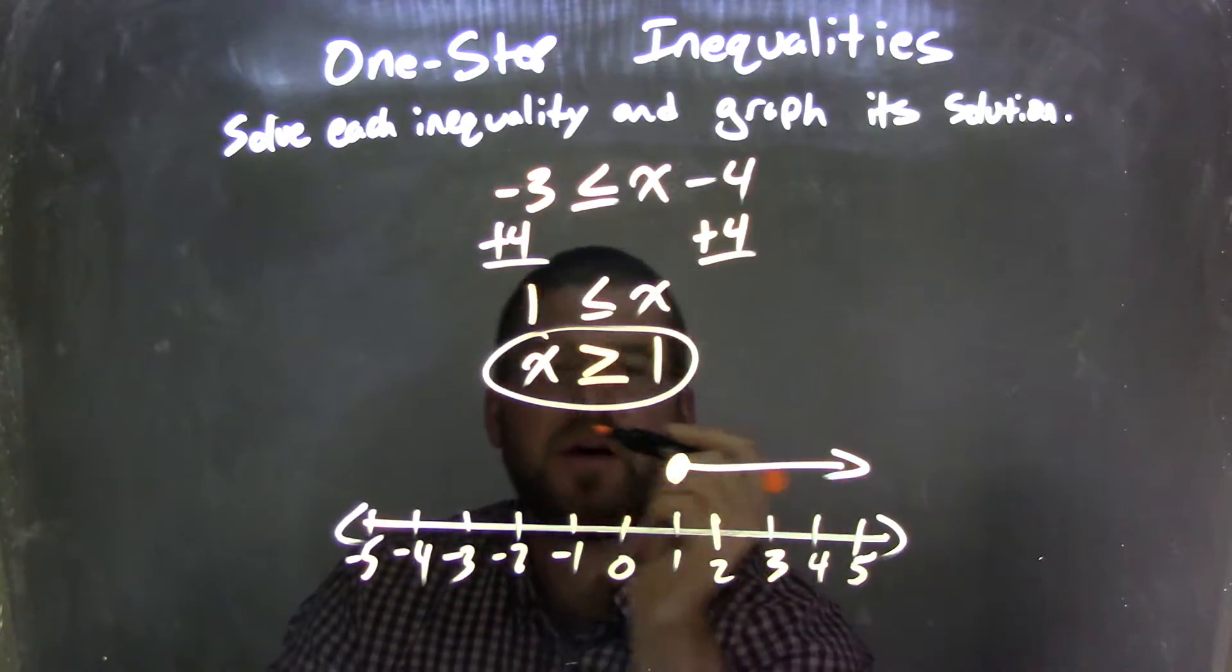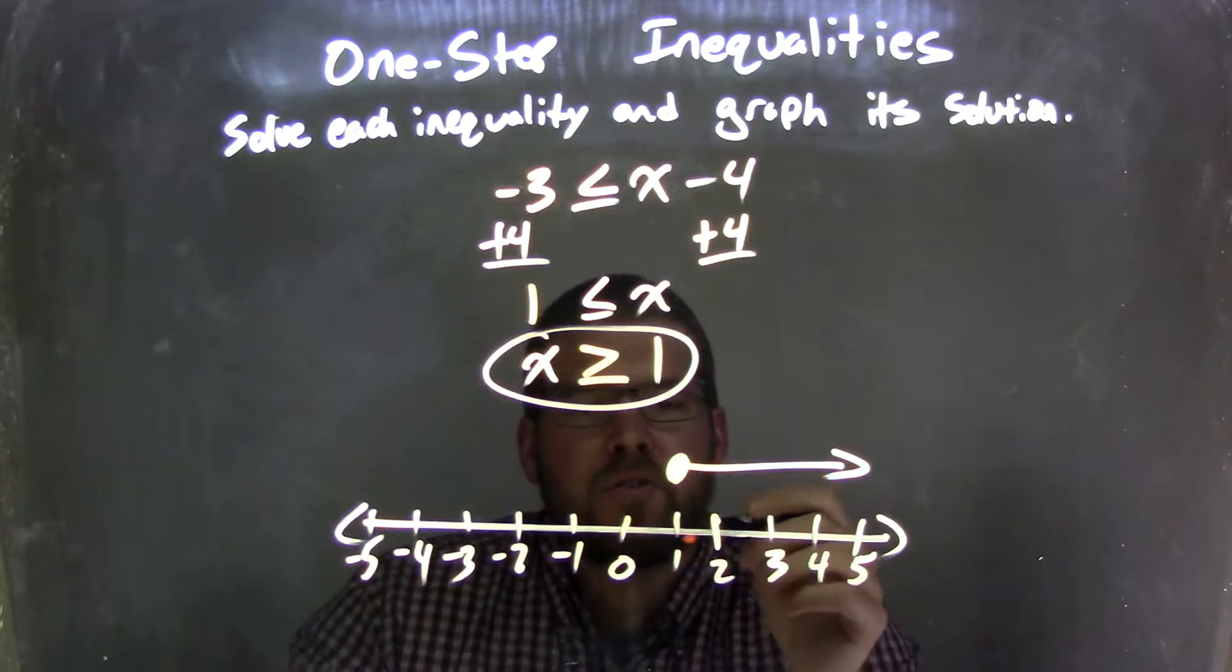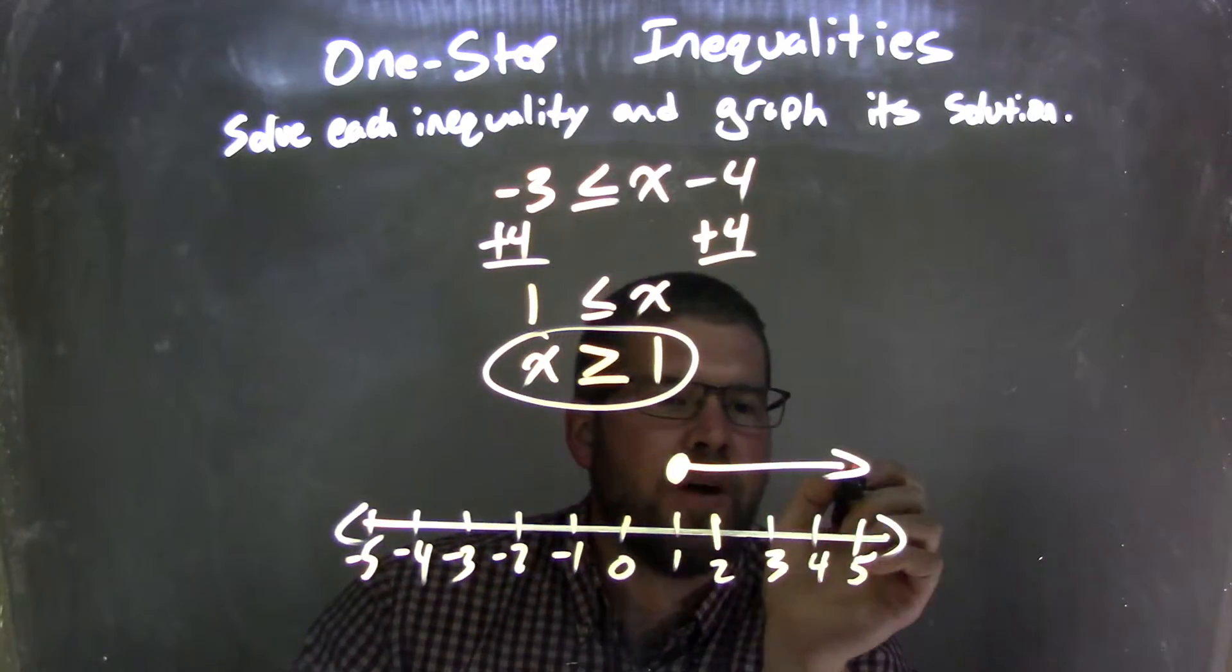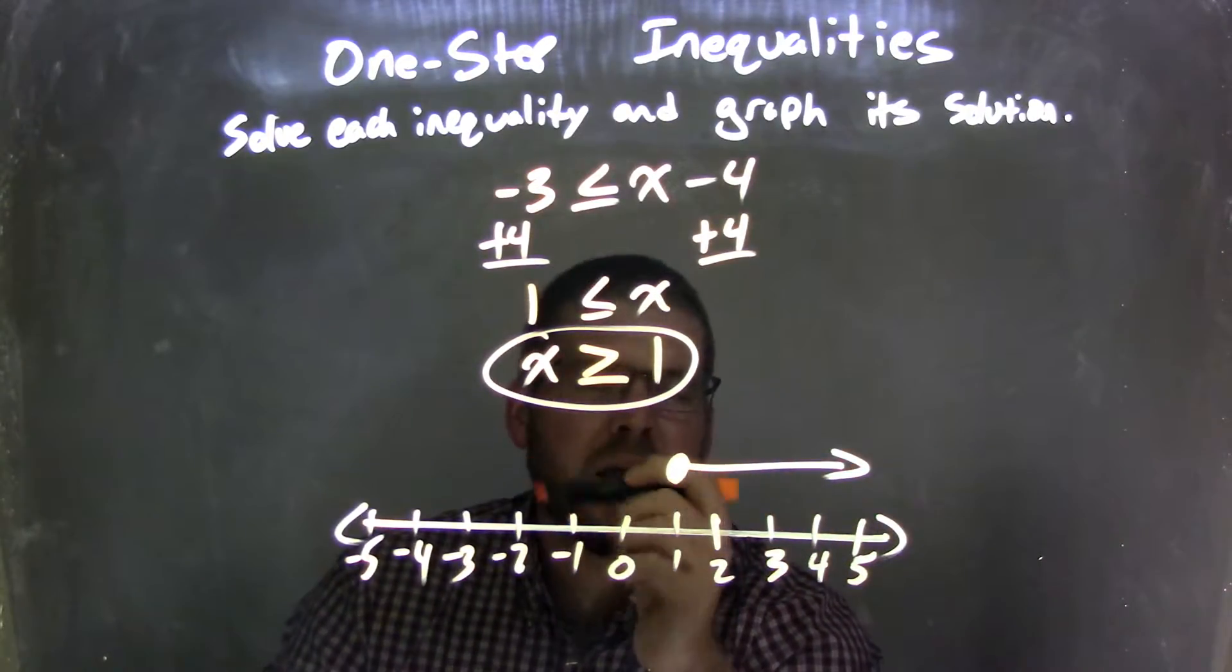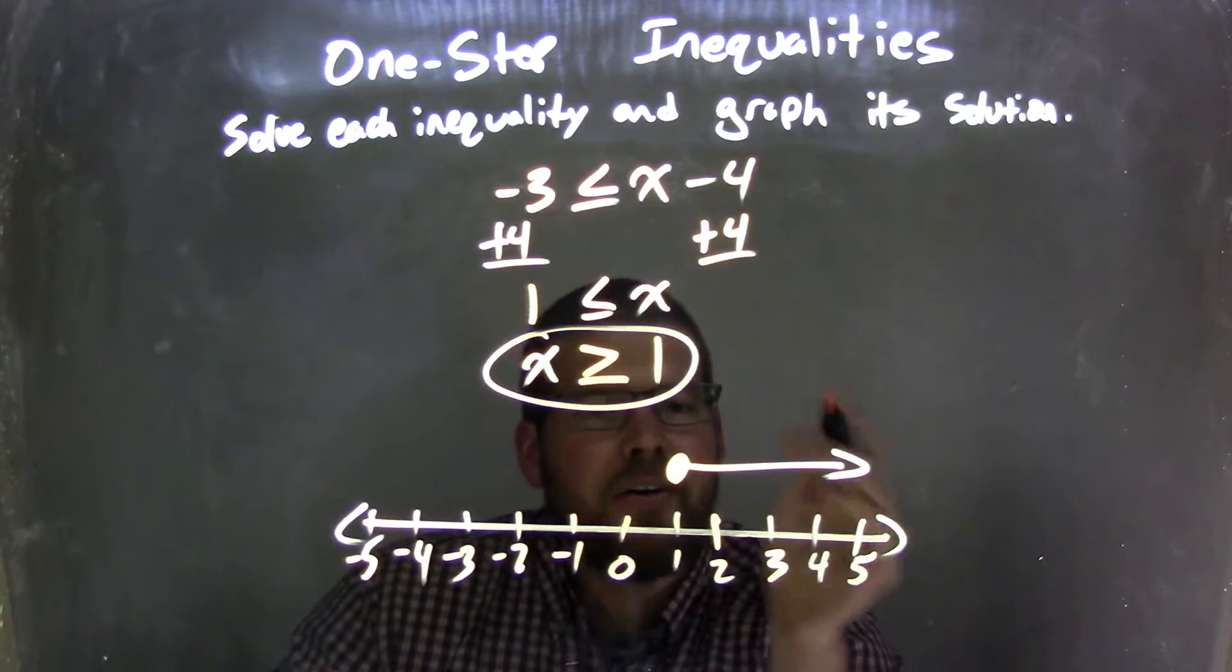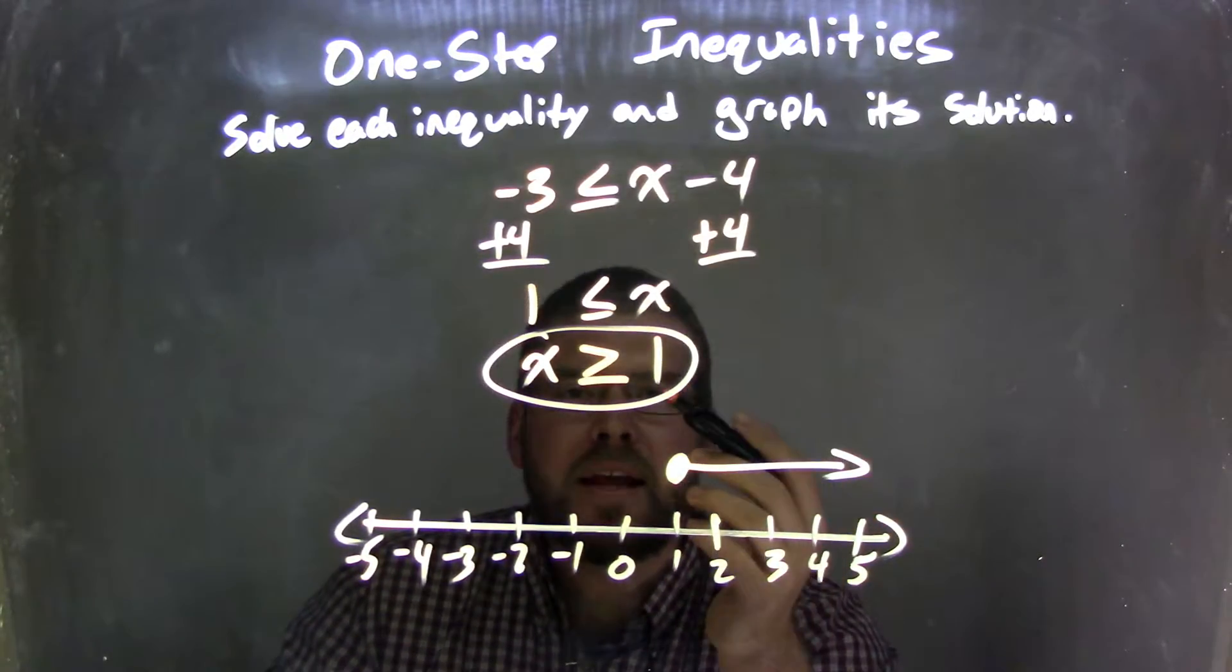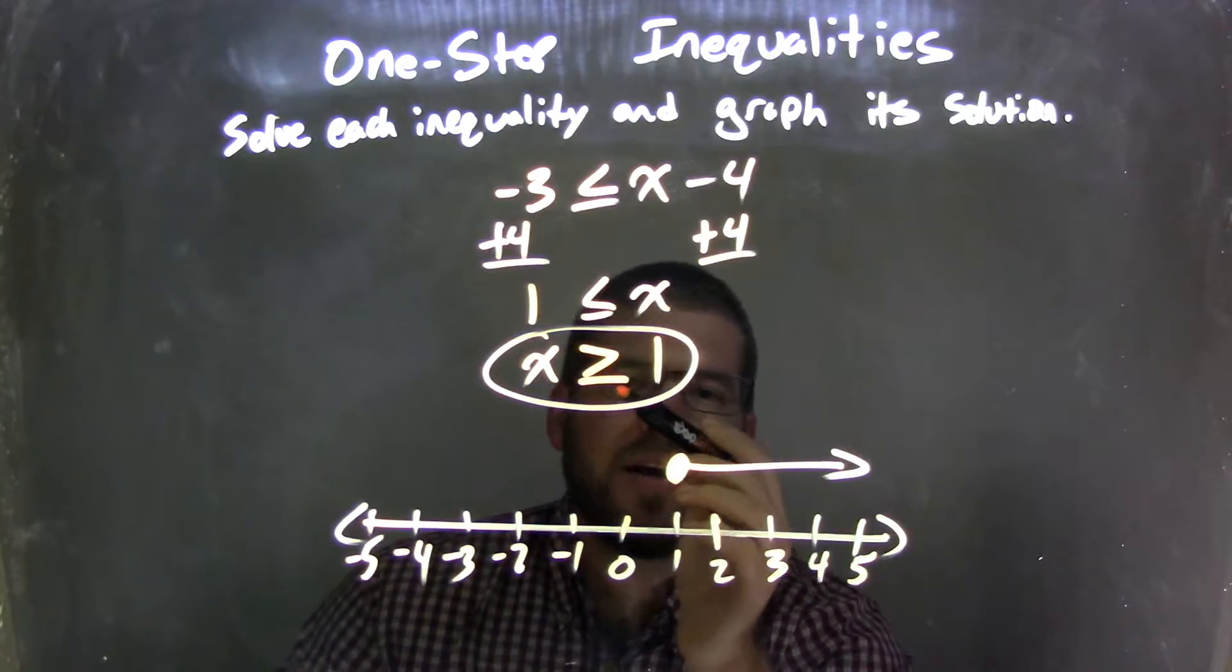Now I need to graph it. By graphing it here, I started at 1, made a closed circle because it's equal to 1, and then shaded to the right because x is greater than 1. This graph represents all solutions for x, which matches our inequality answer of x ≥ 1.